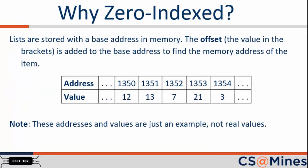You might be wondering, why don't lists just start at 1? Are they trying to confuse us? There is actually a reason that the first element in a list has an index of 0. The elements of a list are stored consecutively in memory with a base address. The offset is then added to the base address in order to access the memory address of the list item you want.